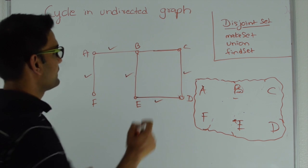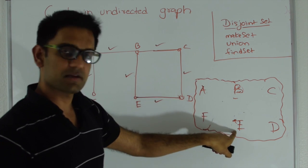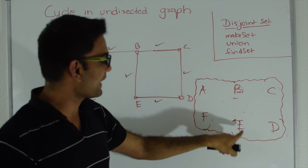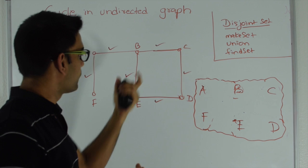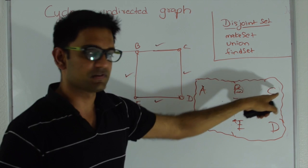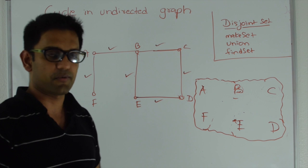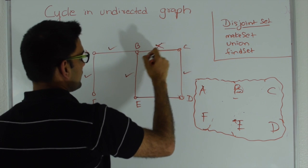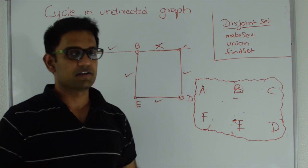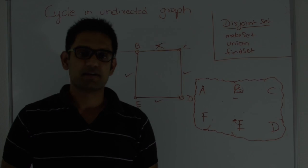Finally let's add edge B-C. Find set on B returns E, and find set on C also returns E. Both vertices are already in the same set, which means there must be another way to connect B to C. So adding this edge is going to create a cycle in the graph — and that's how we find a cycle using disjoint sets. In the next section let's talk about finding a cycle using the DFS algorithm.